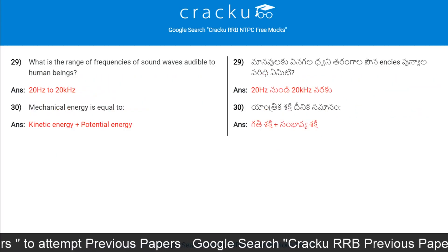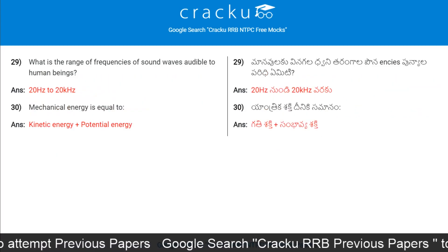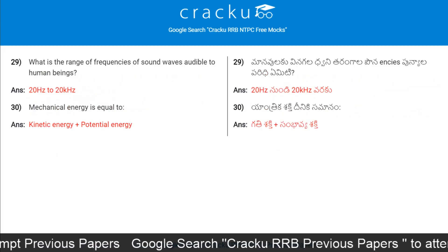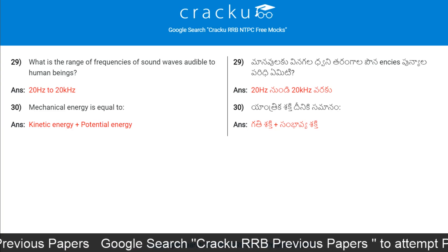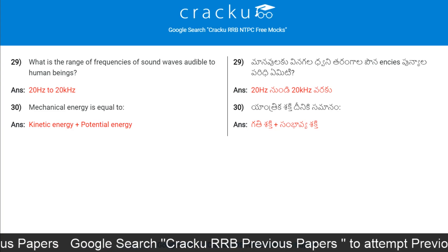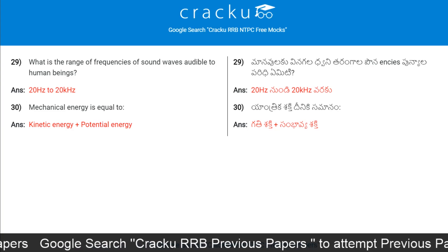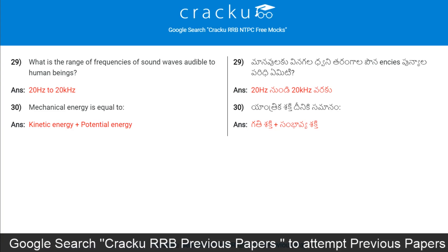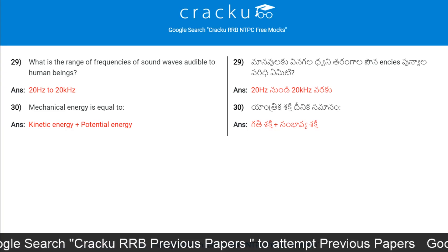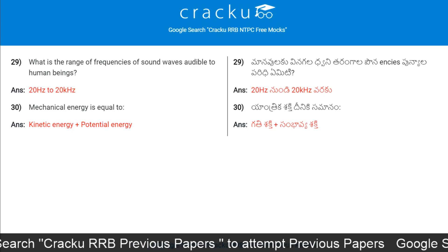What is the range of frequencies of sound waves audible to human beings? The answer is 20 Hz to 20 kHz.